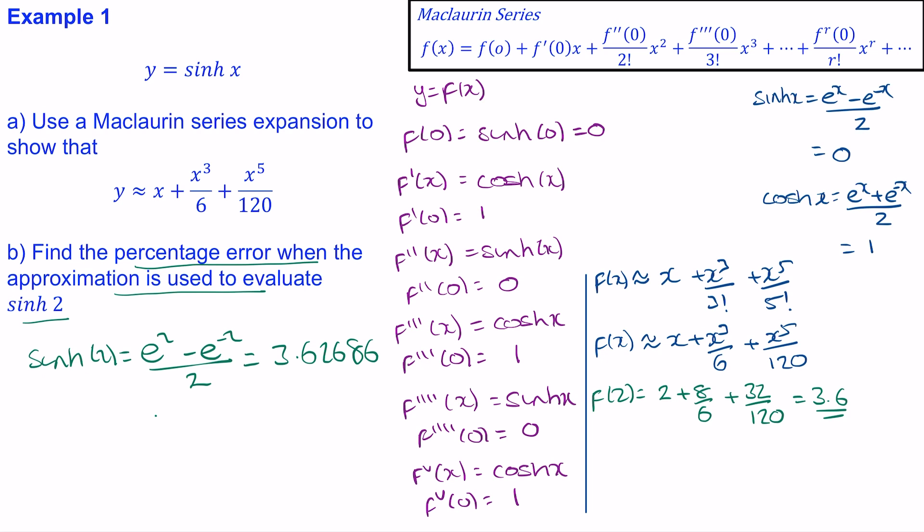So the percentage error will be the actual value minus the approximation, all divided by the actual 3.62686, and then multiply by 100. And this is approximately 0.74%.